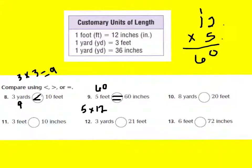Number 10 says 8 yards is what compared to 20 feet? I need to see how many feet are in 8 yards. I know that there are 3 feet in 1 yard, so 3 feet times 8 yards equals 24 feet. So 8 yards equals 24 feet, and I can see that 20 feet is less than 24 feet. So 8 yards is greater than 20 feet.